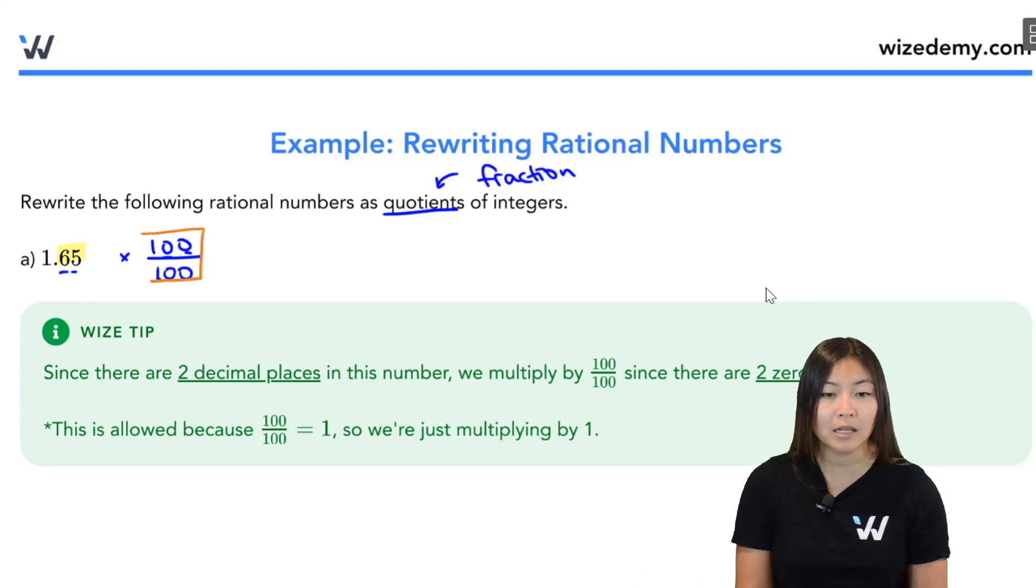Well, essentially, anything divided by itself is just 1, and I'm allowed to multiply a number by 1. It's still the same number, right? I'm not changing the question here. This is still 1.65.